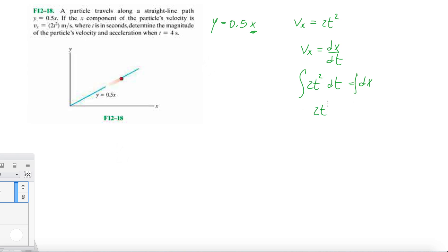Integrating once we get t³/3 plus C1 or something like that, but again taking the derivative of that it goes away, equals x. Now we can get our y equation: y = (1/2) times x which is 2t³/3. Get the twos out of the way and we have our y equation is t³/3.